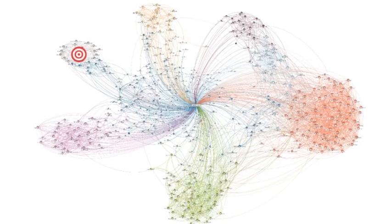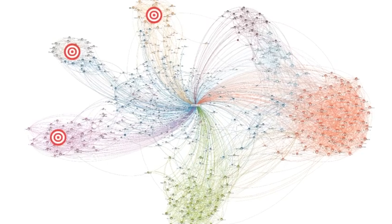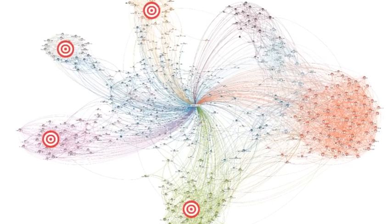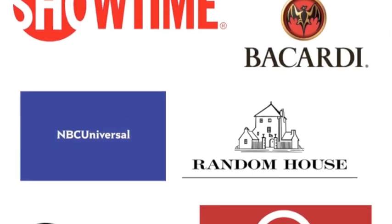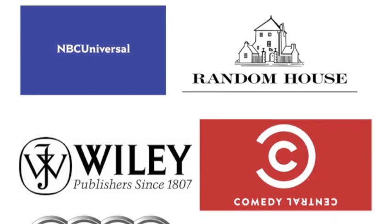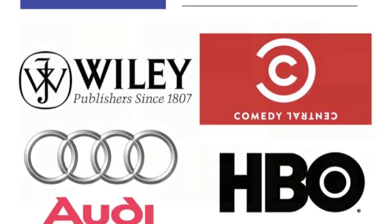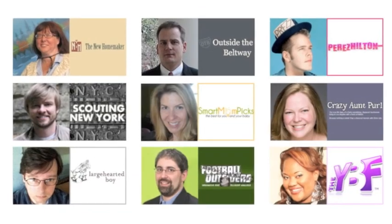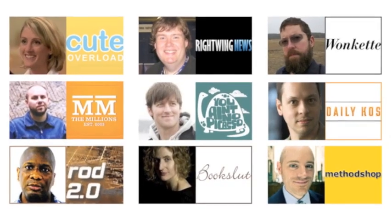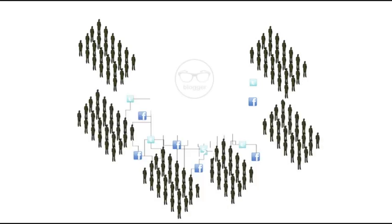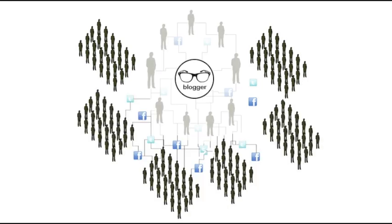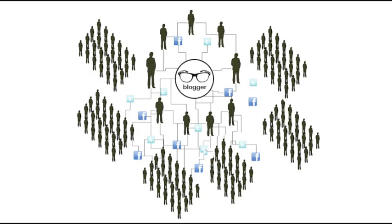Want to target advertising into networks of online influentials? Blogads has helped thousands of advertisers since launch in 2002, and today we place social advertising into more than 3,500 blogs. As media becomes increasingly transitory and fragmented, blogs are human hubs for sharing insights, gossip, and news.